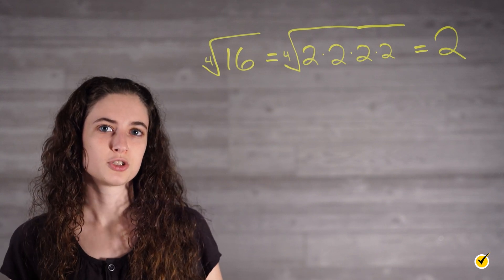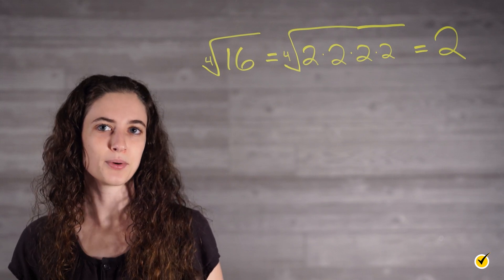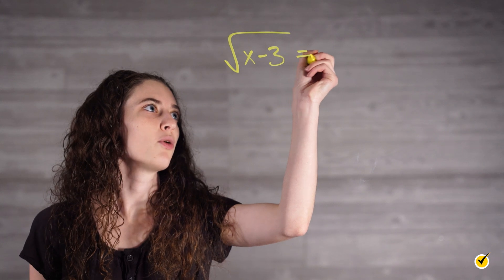Now that we have gone over what roots are, let's learn how to solve equations using them by looking at an example. Solve the following equation for x. The square root of x minus 3 equals 4.